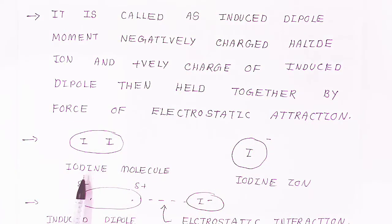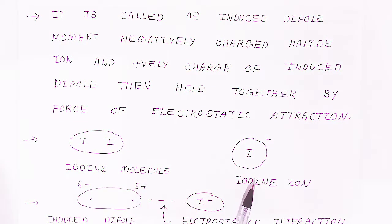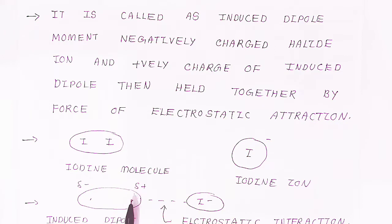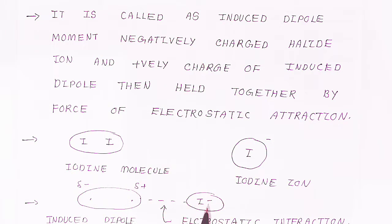This is the iodine molecule and this is the iodide ion. When the iodide ion approaches toward the iodine molecule, there will be partial positive charge and partial negative charge — the induced dipole moments — and there will be electrostatic attraction between the ions and the molecules.